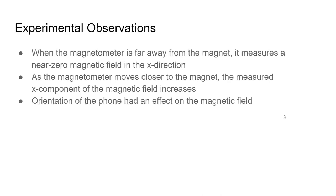Observation. So when the magnetometer is far away from the magnet, it measures a near-zero magnetic field in the x-direction, and then as the magnetometer moves closer, the measured x component of the magnetic field increases. And then the orientation of the phone had an effect on the magnetic field.